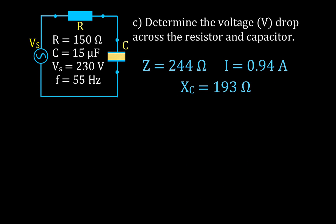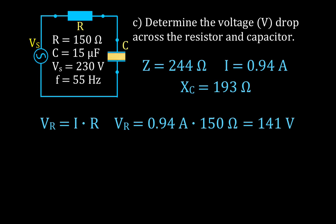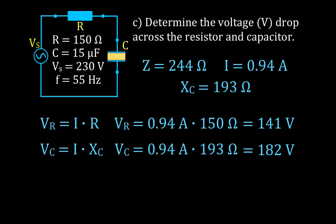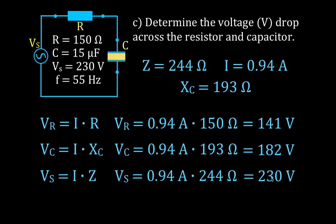Now we calculate the voltage drops across the resistor and the capacitor using Ohm's Law. V equals I times R gives us 144 volts across the resistor. For the capacitor, using the capacitive reactance: V equals I times Xc gives us 182 volts. We can verify by calculating I times Z, which gives back 230 volts — matching the source voltage, confirming our calculations are correct.